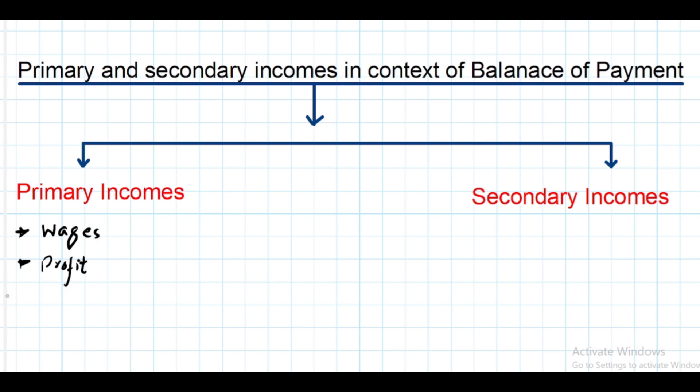Interest on loans - for example, if one country gives a loan to another country and receives interest on that, that is also part of primary income. Similarly, if you have any kind of property abroad and you receive rent from that property, that office, that factory - that is also part of primary income.